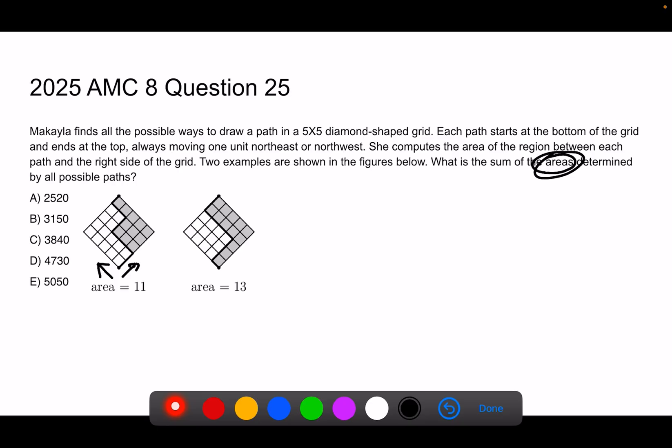This is a pretty good 25 for AMC 8. It actually has two parts, and those two parts, I want to sort of talk about them separately. The first part you need to figure out is, how many ways can we do this? A very nicely designed counting question.